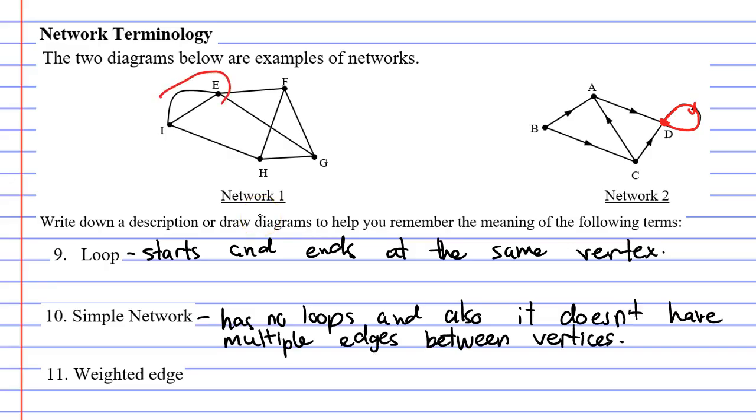Well if we look at vertices E and I they have more than one edge connecting them. We say that they have multiple edges between the vertices. So what we learn here is that neither network one nor network two is a simple network.